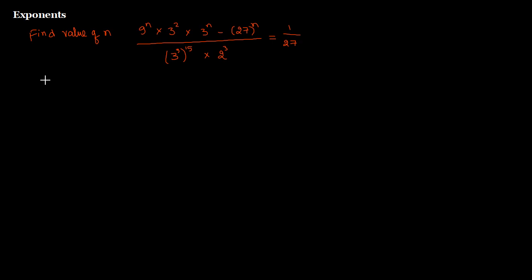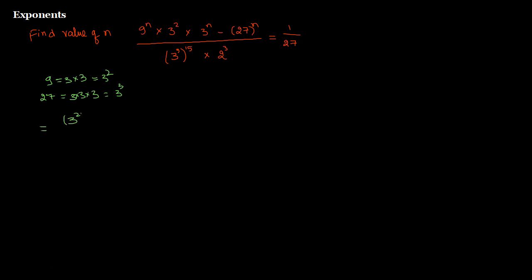If you factorize 9, it gives you 3 multiplied by 3, which is 3 squared. And 27 gives you 3 multiplied by 3 multiplied by 3, which is 3 cubed. So let's substitute these values and try to find the value of n.